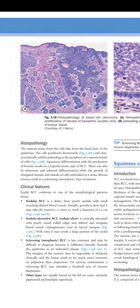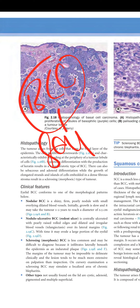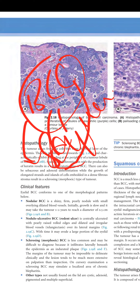Squamous differentiation with production of keratin results in a hyperkeratotic type of BCC. There can also be sebaceous and adenoid differentiation. Growth of elongated strands and islands of cells embedded in a dense fibrous stroma results in a sclerosing type of tumor. So BCC can differentiate into squamous, sebaceous, adenoid, or sclerosing types.